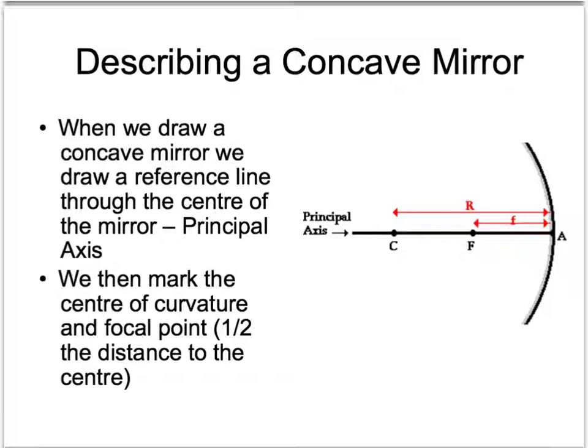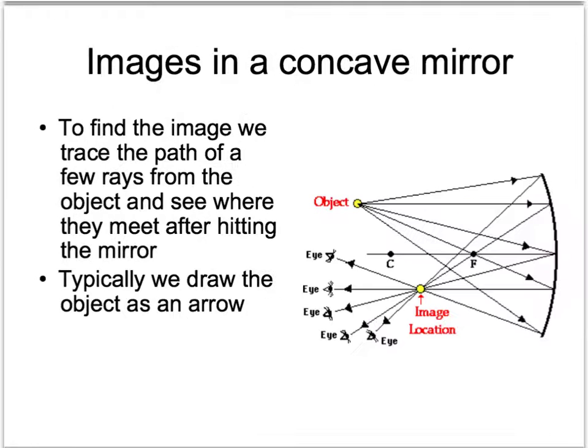We mark the focal point at half the distance from the center of curvature to the actual mirror. This is really important — you can't just freehand the mirror because it actually needs a curvature where the center would be. If it's not actually at the radius, your diagrams just aren't going to work.